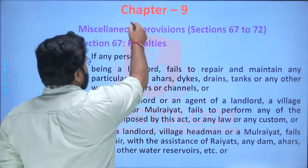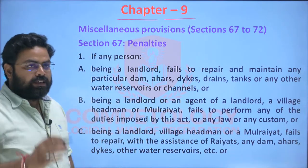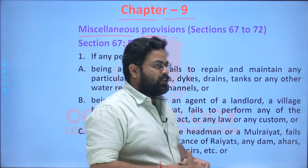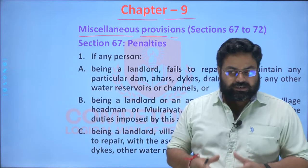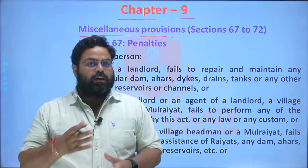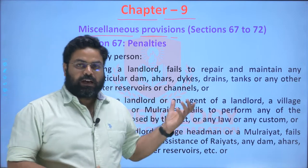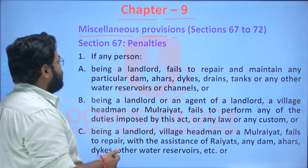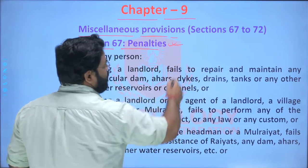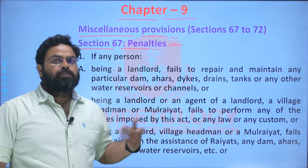Now we come to the next chapter of the SPT Act — Chapter 9 — which is the last chapter, covering miscellaneous provisions. All those provisions which the framers of this act considered important but which were not delineated in the foregoing eight chapters are discussed here. The first section is Section 67, which relates to penalties — the type of penalties or fines that can be imposed on any landlord or other person.